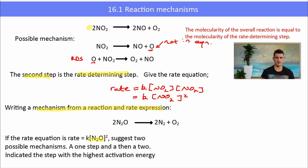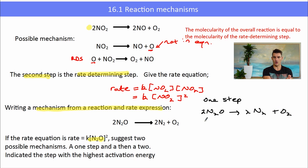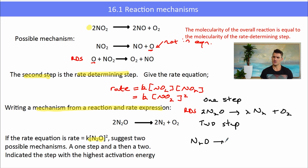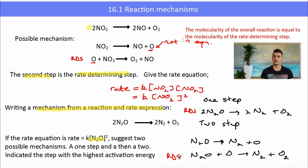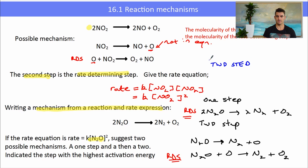We might also be asked to write a mechanism given the rate equation, for example rate equals K times N2O squared. A one-step reaction would simply be N2O breaking down into N2 and O2 — that is the rate determining step and it matches the rate equation. For a two-step reaction, we need to form an intermediate: N2O breaks down into N2 plus O, and that O then reacts with another N2O molecule — with the second step being the rate determining step — to form N2 and O2. This gives the correct rate equation. When designing a two-step mechanism, always think about the chemical decomposing to a radical.